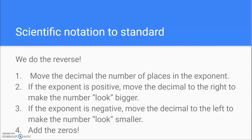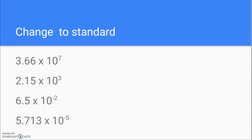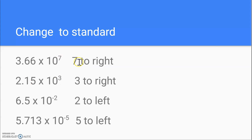What happens if we want to go the other way? What if we have a number in scientific notation and we want to change it to standard notation? Basically, we do the reverse of what we just did. We move the decimal the number of places indicated by the exponent. If the exponent is positive, we move the decimal to the right to make the number look bigger. If the exponent is negative, we move the decimal to the left to make the number look smaller. And then we add back all those zeros. So 10 to the 7th means move the decimal 7 places to the right; 10 to the 3rd means move it 3 places to the right; 10 to the negative 2nd means move it 2 places to the left; and 10 to the negative 5th means move it 5 places to the left.